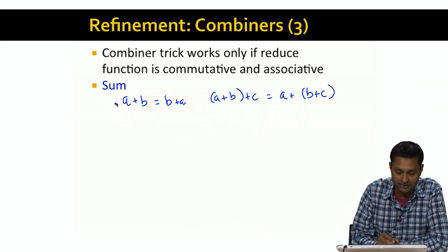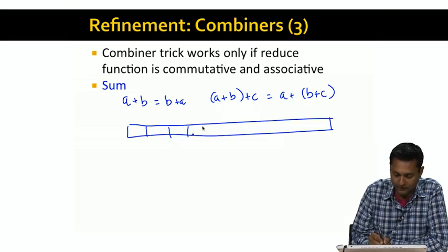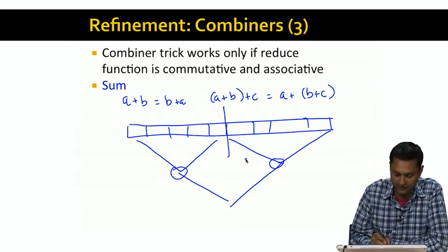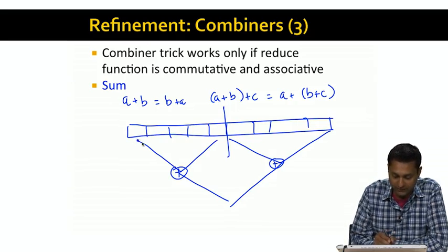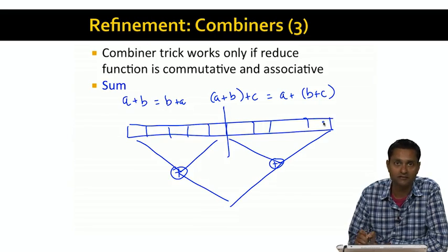Because sum satisfies both these properties, sum can be used as a combiner as well as a reducer. What that really means is that if you have a lot of values that need to be summed, you can break it up into two pieces, sum up the first piece, sum up the second piece, and then sum up the two intermediate results, and you'll get the same answer. The first combiner sums up the first chunk of outputs, the second combiner sums up the second chunk, then you sum up the two intermediate values and get the same result as if you had summed all the original values to begin with. That trick works because sum is commutative and associative.